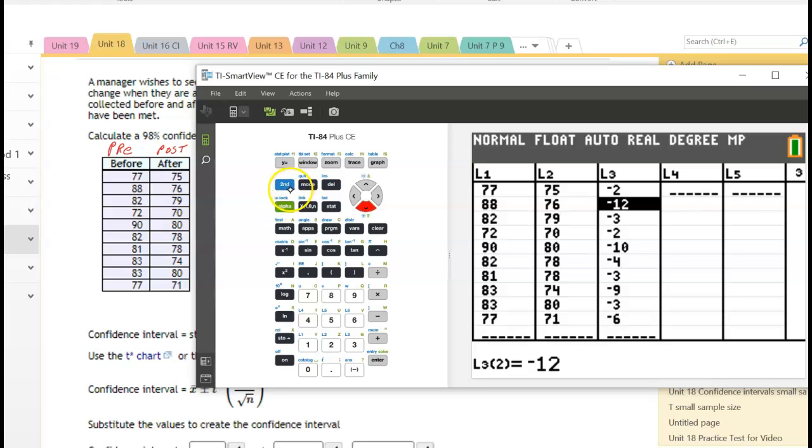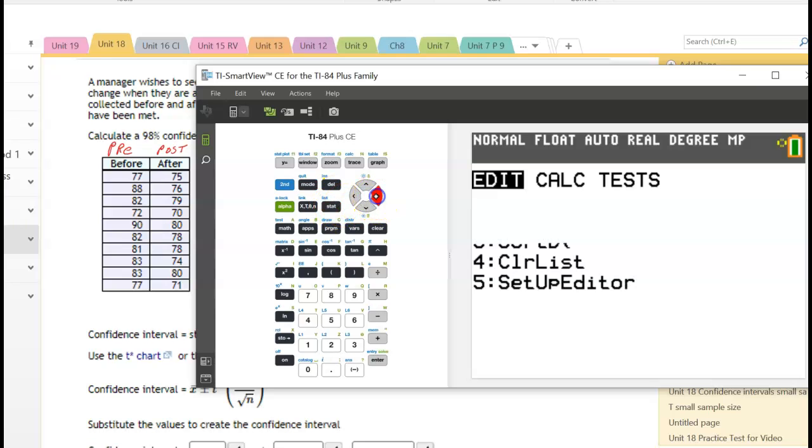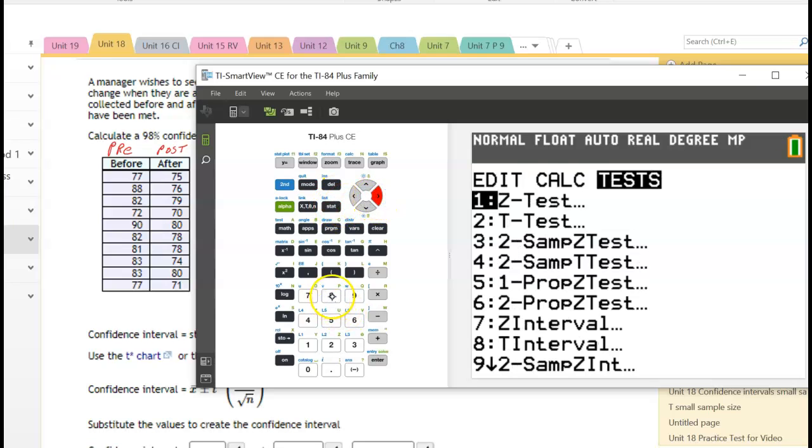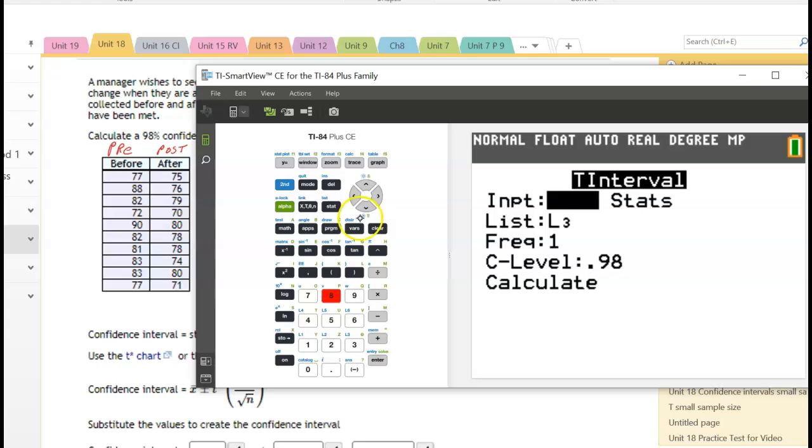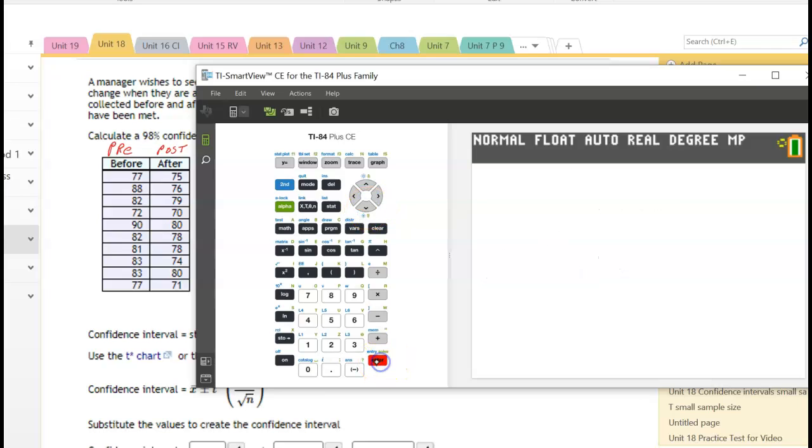And we need to calculate a confidence interval, so press second, quit. We're going to press stat, move over to test. We're going to press number eight. We have the data and this time we want to look at L3. So we're going to press second L3 in case that isn't in there. And it does say 98% confidence, so 0.98 there. We're going to move down to calculate and press enter.